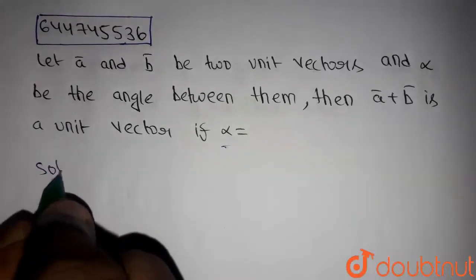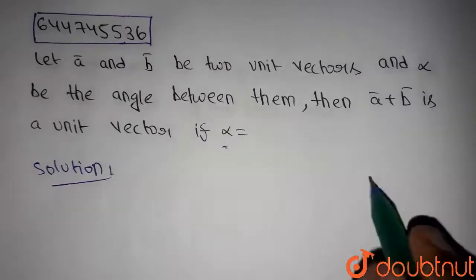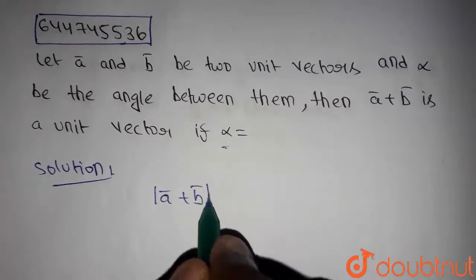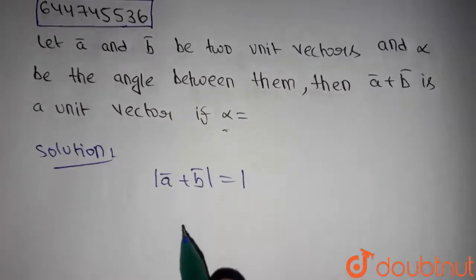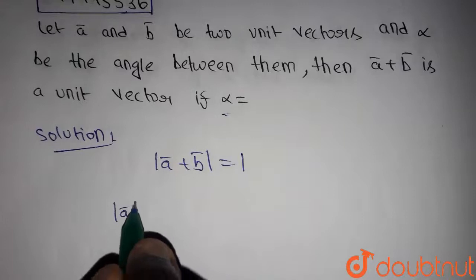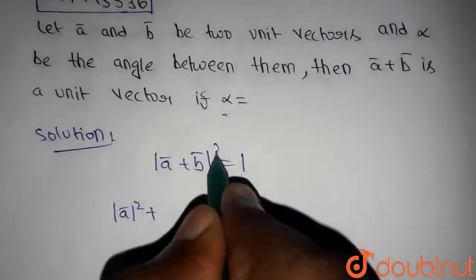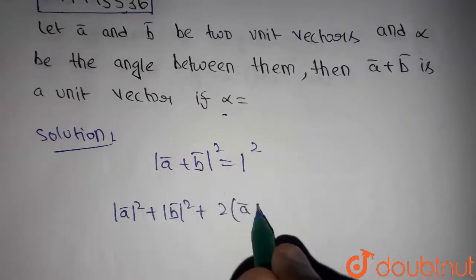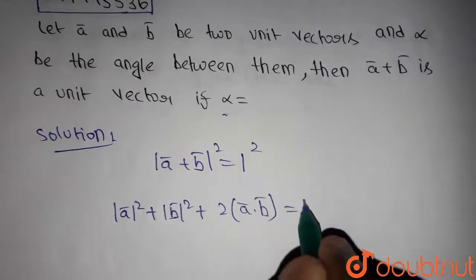Let's get into the solution. It is given that a plus b is a unit vector, then we can write magnitude of a plus b equals one. If we square both sides, we get magnitude of a squared plus magnitude of b squared plus 2 times a dot b equals one.